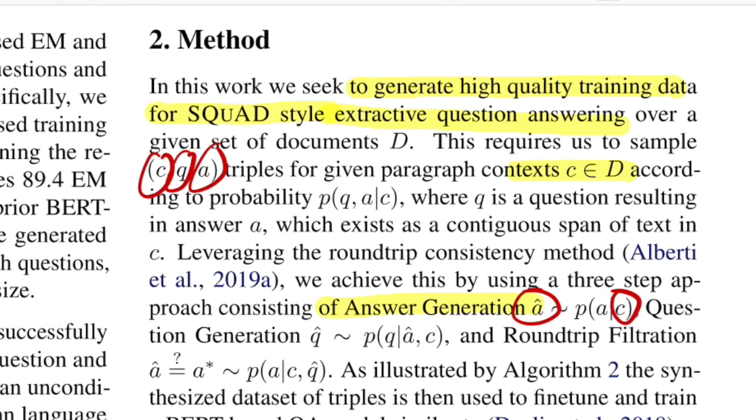The second step in the pipeline is question generation. Again the idea is: if I give you the context and the answer that I have generated as part of the previous step, what are the possible questions that I might ask to get that same answer?